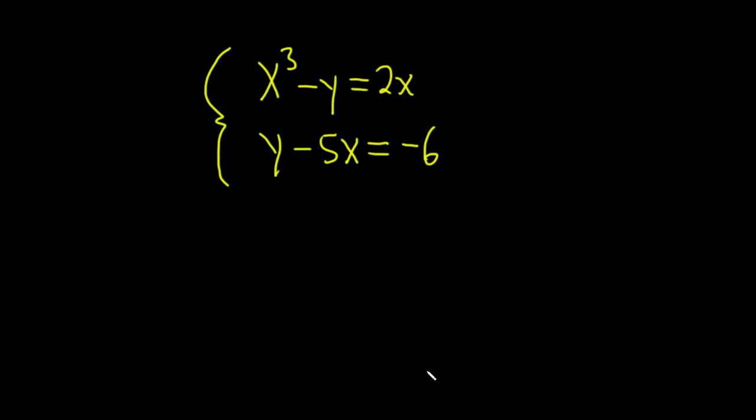Hello, in this problem we're going to solve this non-linear system of equations. We have x cubed minus y equals 2x and y minus 5x equals negative 6. To do this, I'm thinking one way is to use substitution. We're going to take the second equation and solve it for y and plug it into the first equation. I think that will be a good strategy.